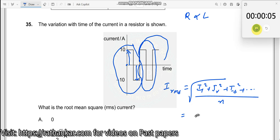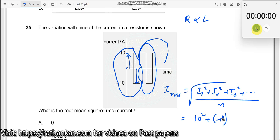So, I1 square, what is the value of I1 square? 10 square. What is the value of I2 square? Plus minus 10, minus 10 the whole square, divided by how many currents we have taken? Only two currents over here.